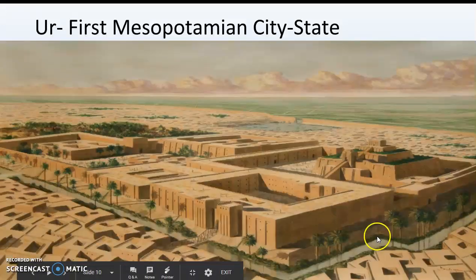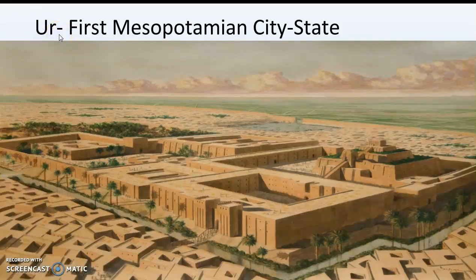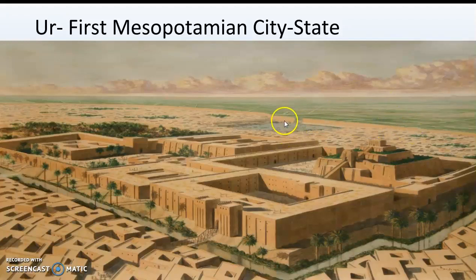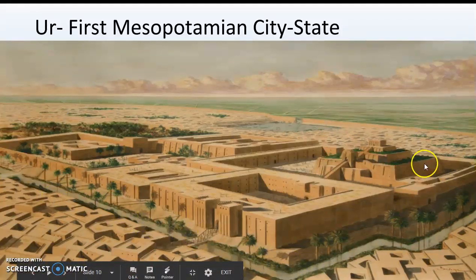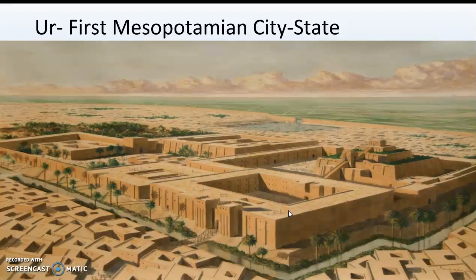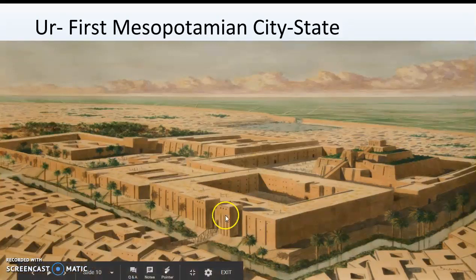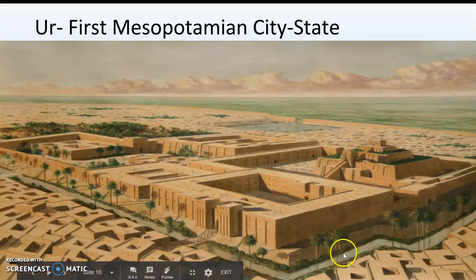Now we're going to look at Ur, the very first Mesopotamian city-state. On the outside of Ur, the green areas are the farms where people are growing crops. Between the farmland and the city is a wall to keep out people trying to attack the people of Ur. Inside the wall there are lots of houses where common people live — traders, merchants, and farmers. In the middle of the city there's a moat with bridges, and past the bridges are large buildings: the government buildings and temple where the priests live. This is what Mesopotamian city-states look like — farms outside, a wall, houses for the people, and government buildings in the center.